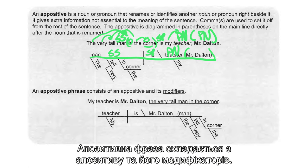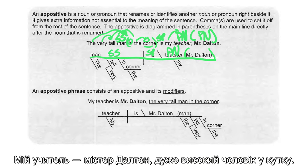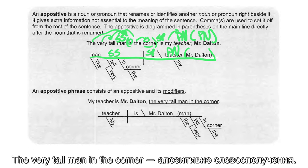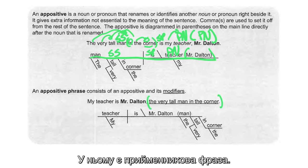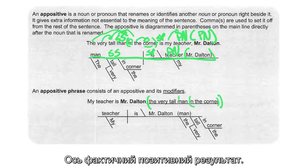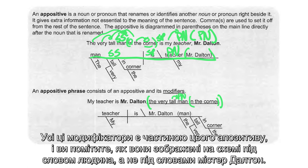An appositive phrase consists of an appositive and its modifiers. For example: 'My teacher is Mr. Dalton, the very tall man in the corner.' The very tall man in the corner is the appositive phrase — it has a prepositional phrase in it. Here is the actual appositive: man. All of these modifiers are part of that appositive, and you'll notice how they are diagrammed below the word man, not below the words Mr. Dalton.